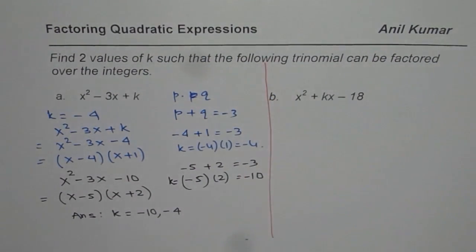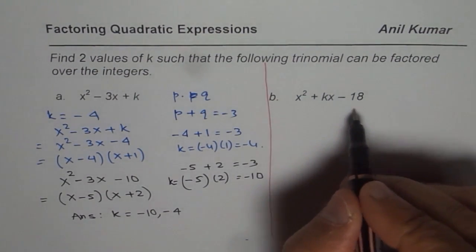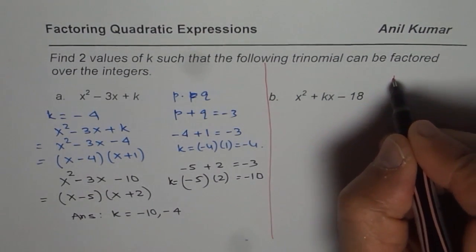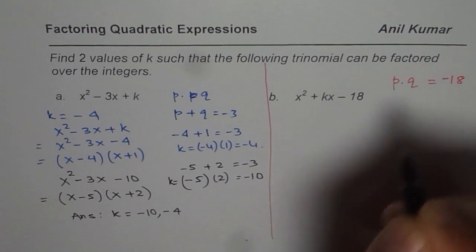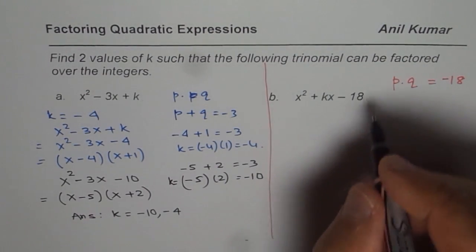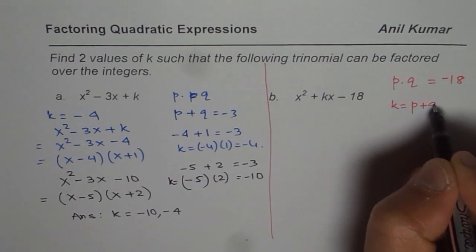Do you understand? That is how we really solve it. Now let us take up the next example where we are given the product. Now p dot q, the product of two numbers should be minus 18. So what can k be? k actually has to be the sum of p and q. That is the strategy.